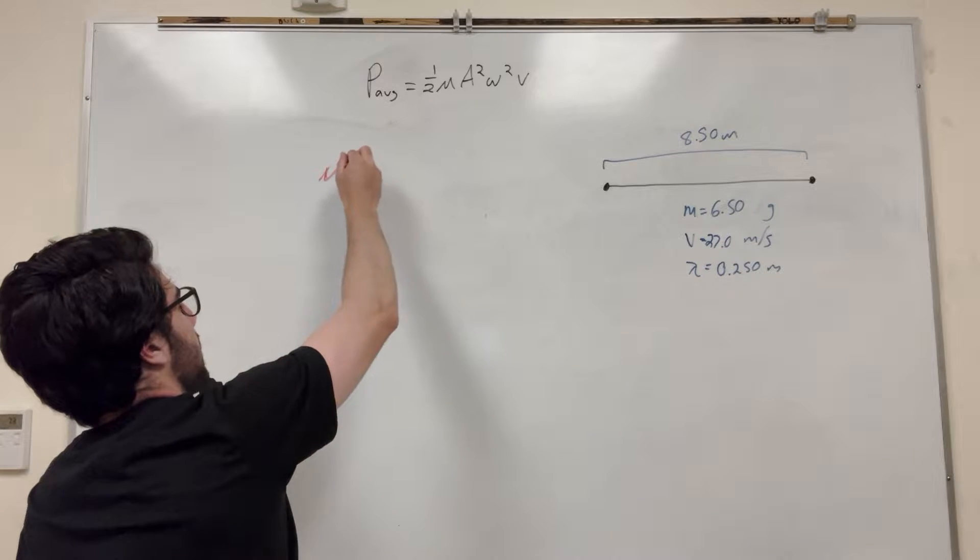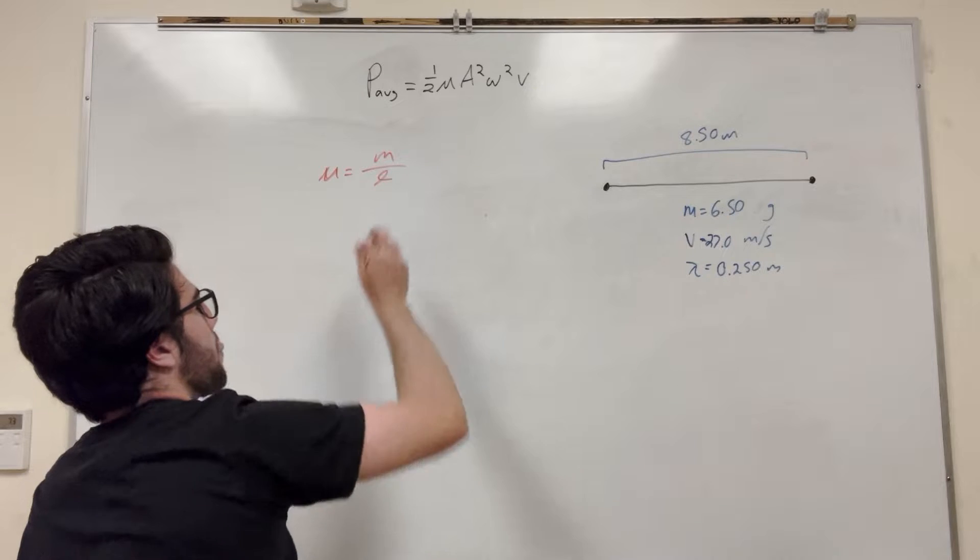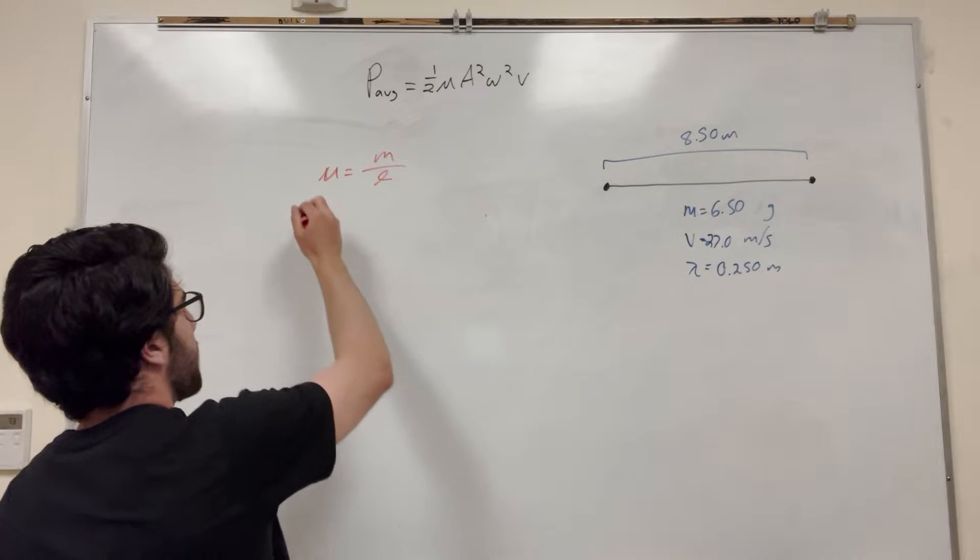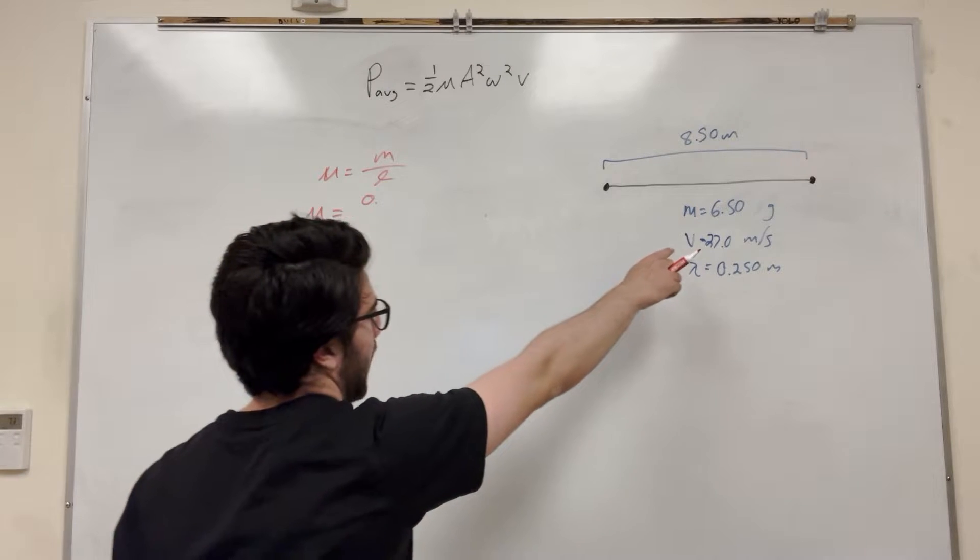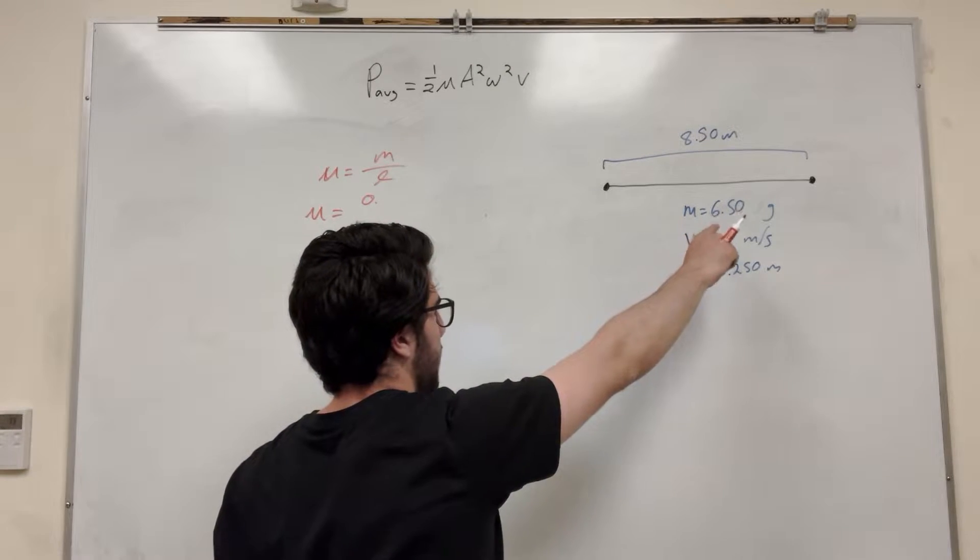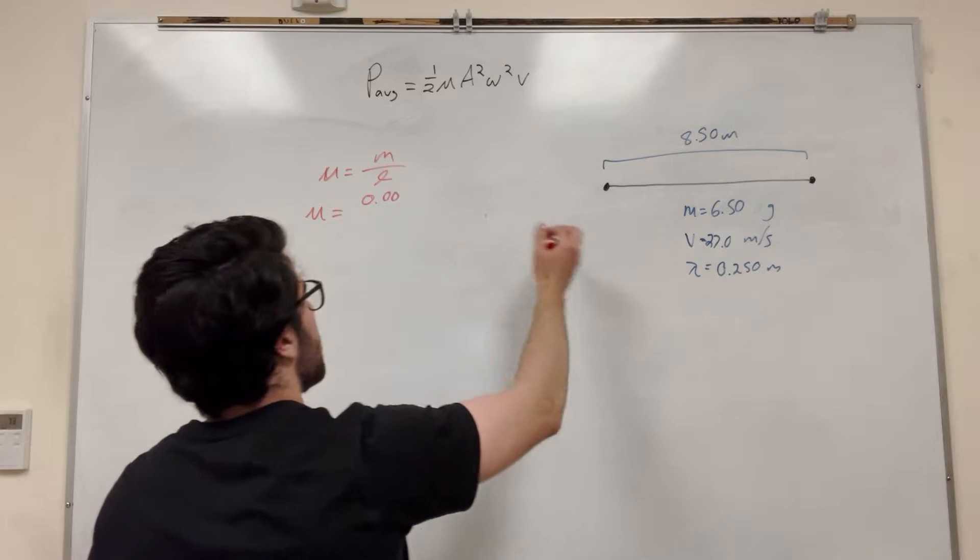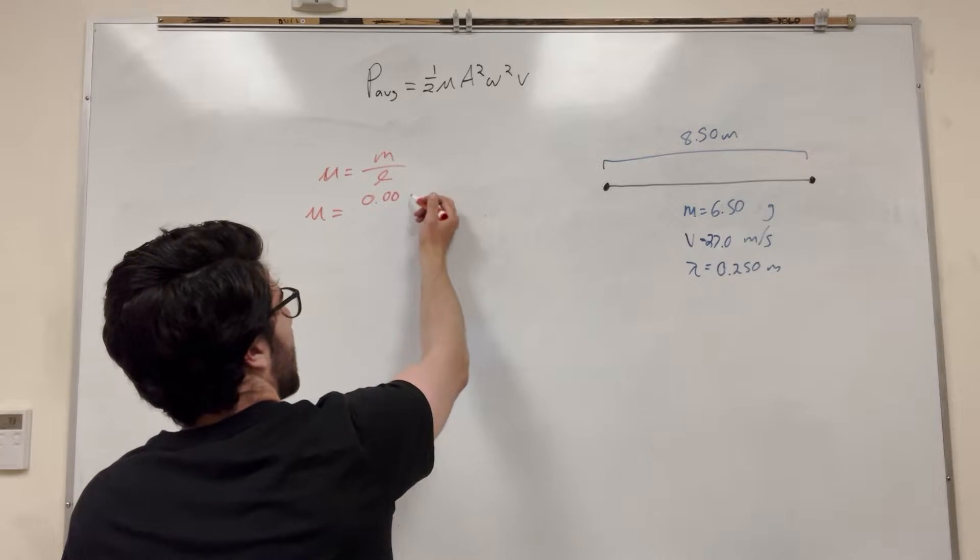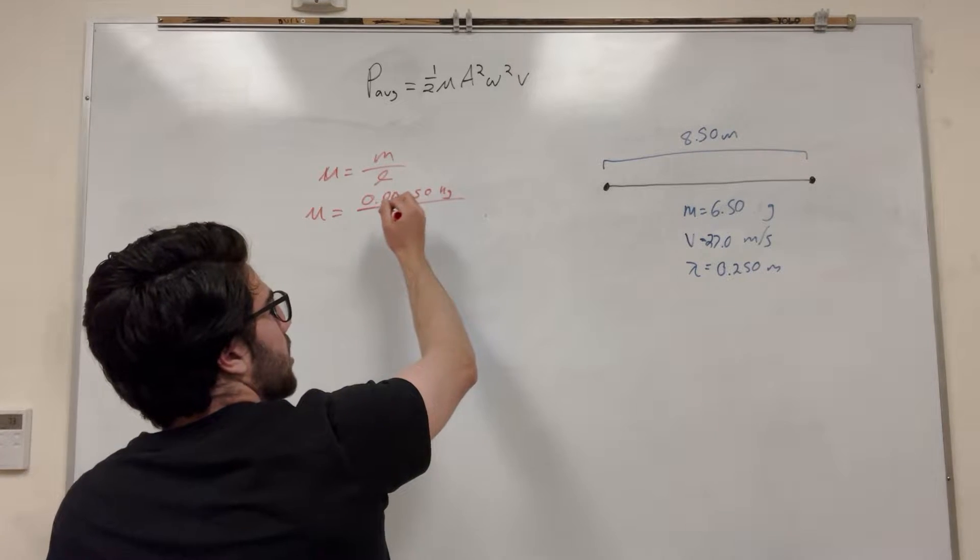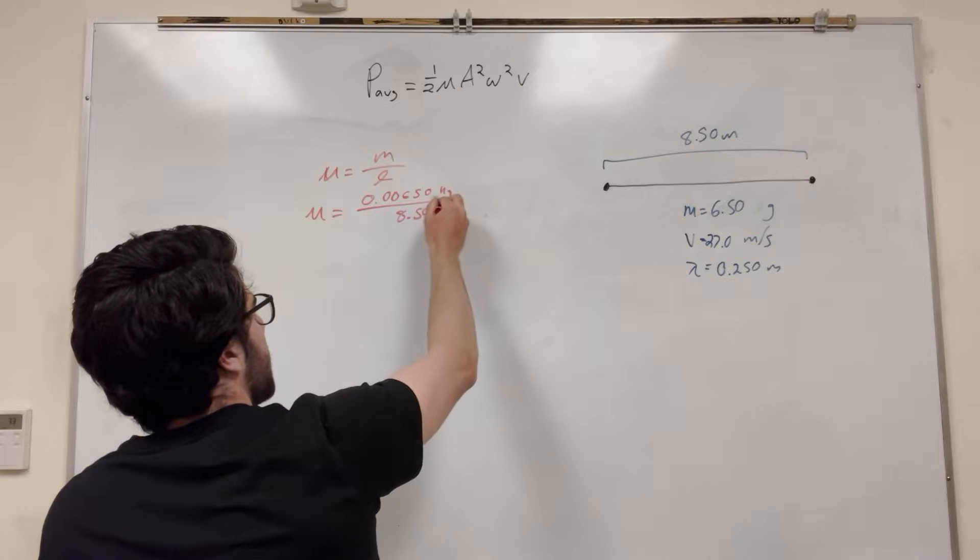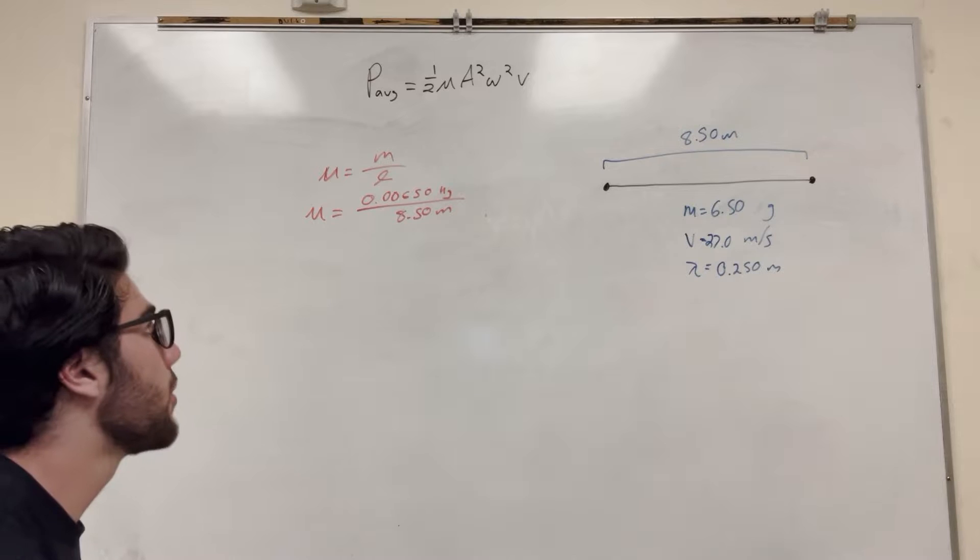That mu symbol is basically the mass per unit length. So if we want to figure that out, we need it in kilograms. So we have our mass of the string 6.50 grams, we're going to divide it by 1,000 to get 0.00650 kilograms per unit length 8.50 meters. So that's going to be a number that you can plug in. I'm just going to keep it there and I'm going to plug it into my equation.